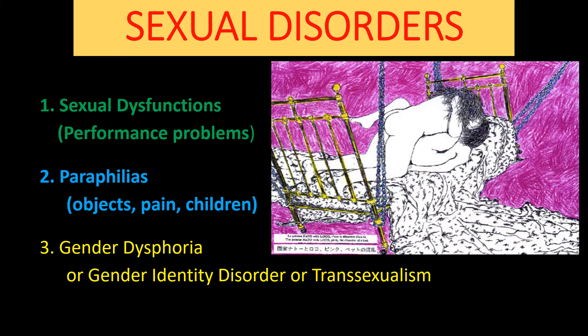The first group are called sexual dysfunctions. I like to think of these as performance problems. Couples are trying to have a sexual relationship, and there's something going wrong — maybe a man can't get an erection, or a woman can't get an orgasm, or there's pain involved. People are trying to have a sexual relationship and they have something that is causing trouble. That is called a sexual dysfunction.